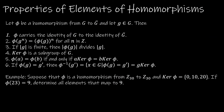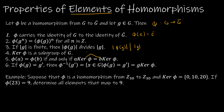Let's look now at some properties of elements of homomorphisms. Phi is a homomorphism from G to G bar. First, phi carries the identity of G to the identity of G bar: phi(e) = e bar. Second, phi(g^n) = (phi(g))^n for all n in Z. Third, if the order of g is finite, then the order of phi(g) divides the order of g. Fourth, the kernel of phi is a subgroup of G. Fifth, phi(a) = phi(b) if and only if the left cosets a·ker(phi) and b·ker(phi) are equal.